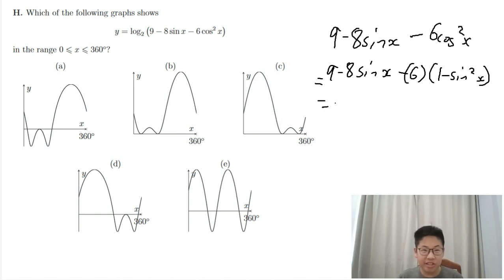No joke, I actually use this to memorize trigonometry identities. So, 6 cos squared x is 6 times 1 minus sine squared x. So, 6 sin squared x minus 8 sin x plus 3.